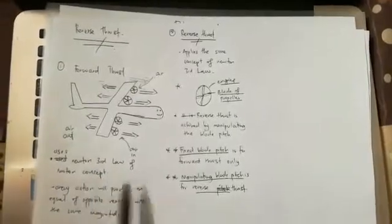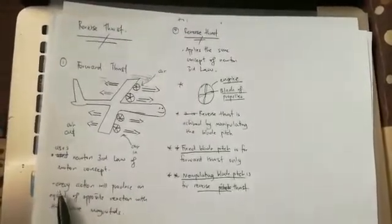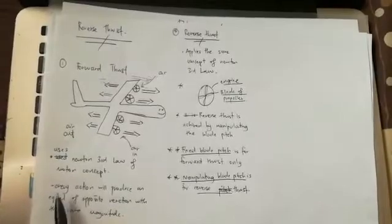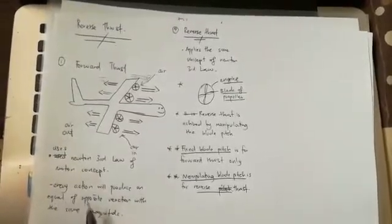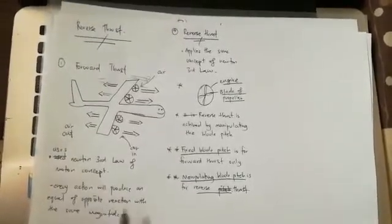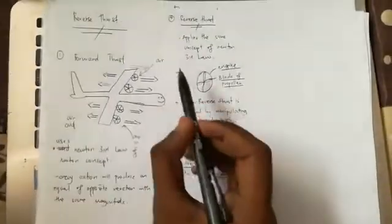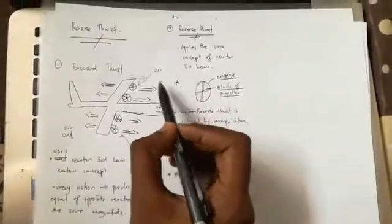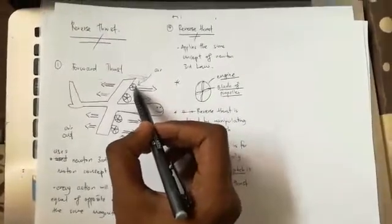Forward thrust uses Newton's third law of motion, which states that every action will produce an equal and opposite reaction with the same magnitude. This defines how the air taken in at the front of the aircraft is converted into an equal amount of force exerted forward.